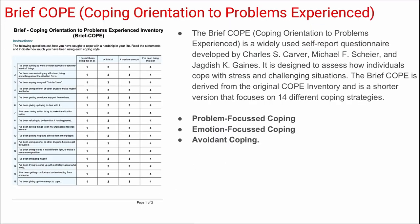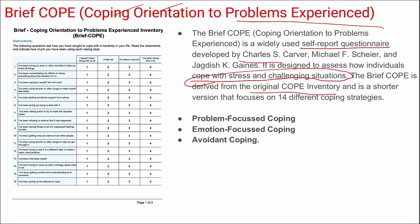Brief COPE — Coping Orientation to Problems Experienced — is used to assess coping mechanisms for stress and challenging situations. It is a widely used self-reported questionnaire developed by Charles S. et al., derived from the original COPE inventory. It is a shorter version focusing on 14 different coping strategies grouped under problem-focused coping, emotion-focused coping, and avoidant coping.